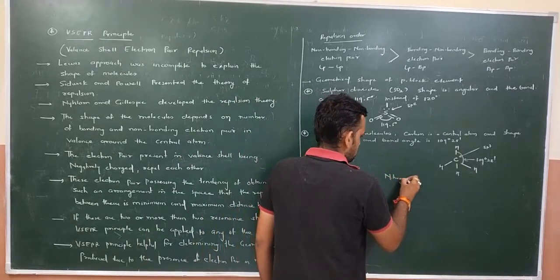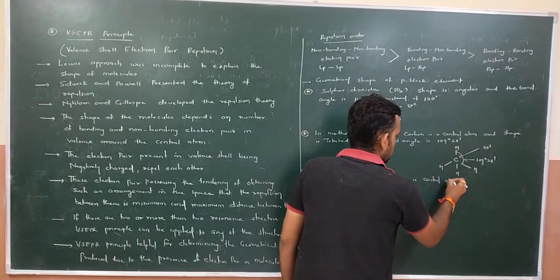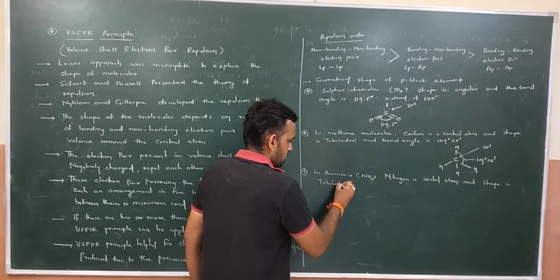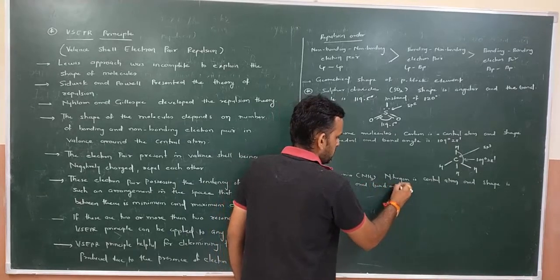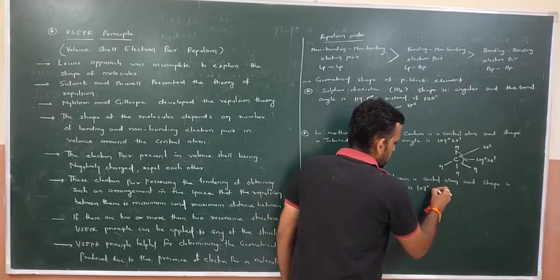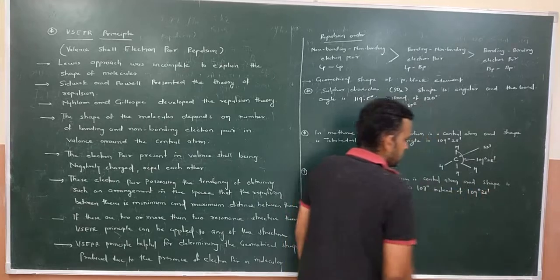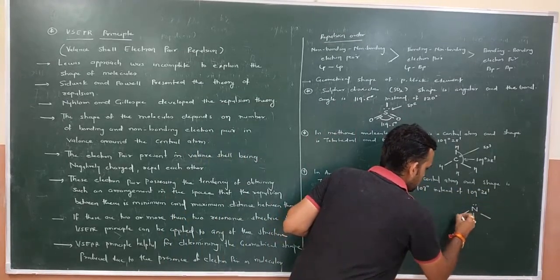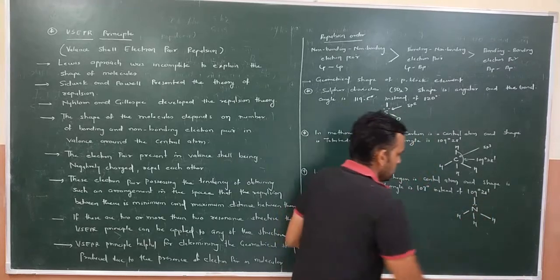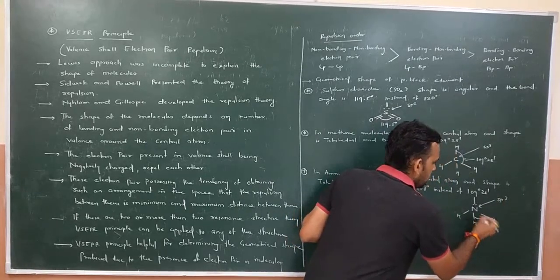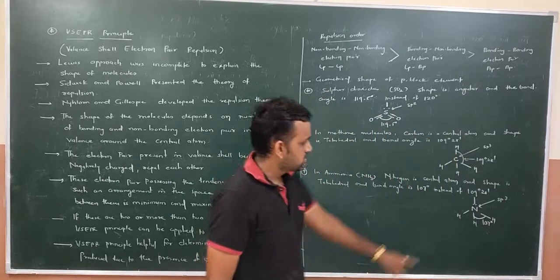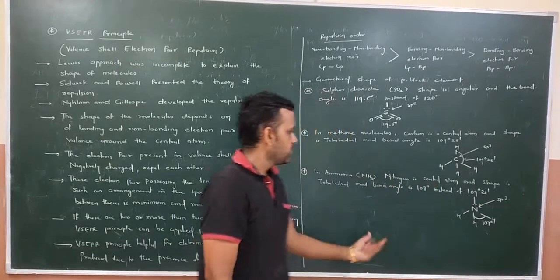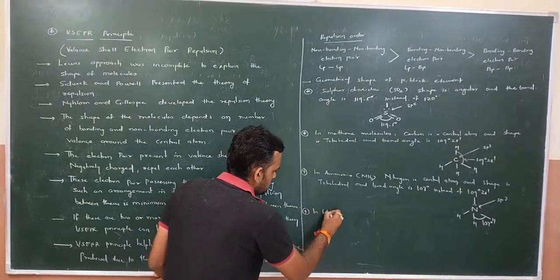Next example: in ammonia (NH3), nitrogen is the central atom. The shape is trigonal pyramidal and the bond angle is 107 degrees instead of 109 degrees and 28 minutes. This is because nitrogen in sp3 hybridization has one non-bonding electron pair, so there is repulsion between the lone pair and bonding pairs, which decreases the bond angle.